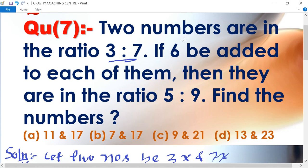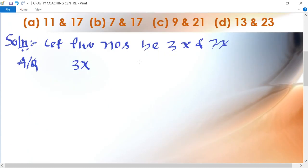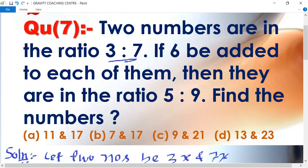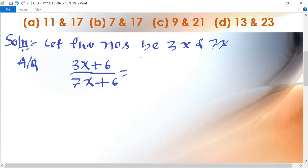3x, if 6 is added to each of them, so 3x plus 6 upon 7x plus 6, so the ratio becomes 5 is to 9. After cross multiplication...